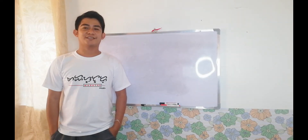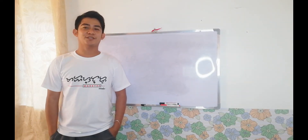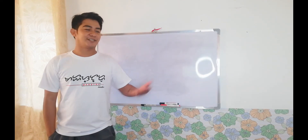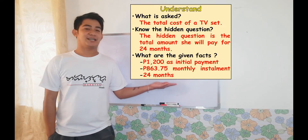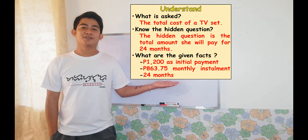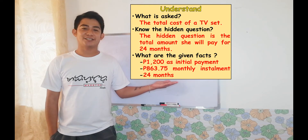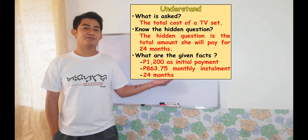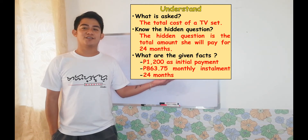We have four steps that we need to follow in solving word problems. The first step is Understand — understand what is asked. So, what is being asked in our word problem? The question in our word problem for today is the total cost of the TV set.